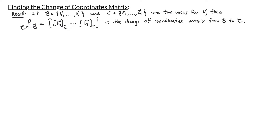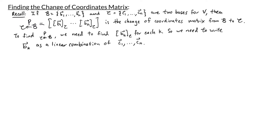In our last video we learned that if the vector space V has two bases, B with vectors b1 through bn and C with vectors c1 through cn, then the change of coordinates matrix P from B to C is a matrix where the columns are the C coordinate vectors for b1 through the C coordinate vectors for bn. So if I want to find P from B to C, I need to express each of the B vectors as a linear combination of the C vectors, so I know what the C coordinates are for each B vector.